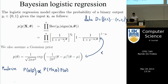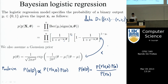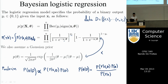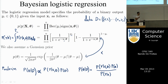The problem is that p of theta given D requires computing p of y given x as a normalization constant. And p of y given x equals the integral of p of y given x and theta, times p of theta, d theta. We don't know how to do this integral in practice — there's no known analytical solution.